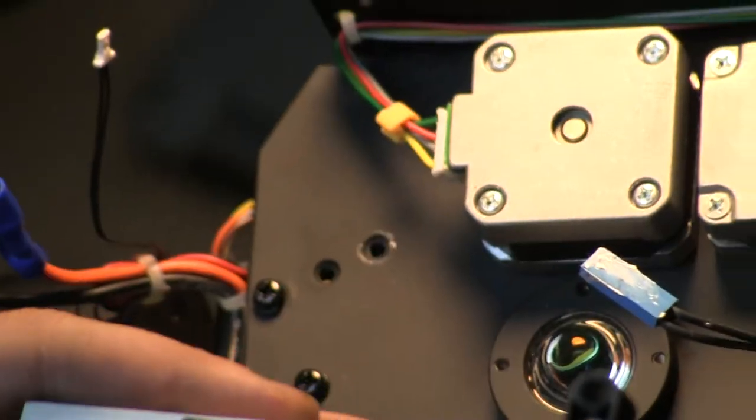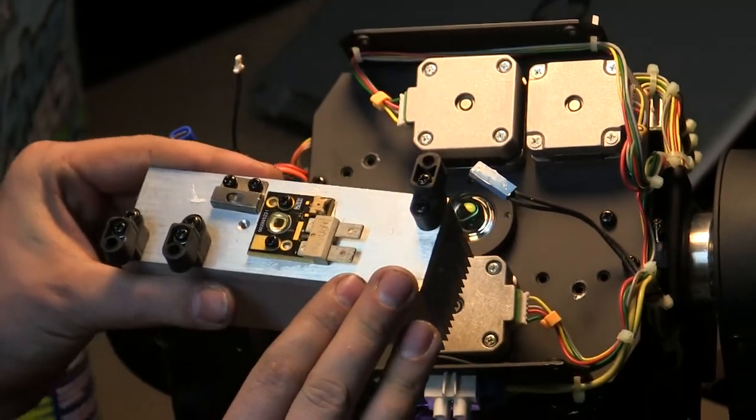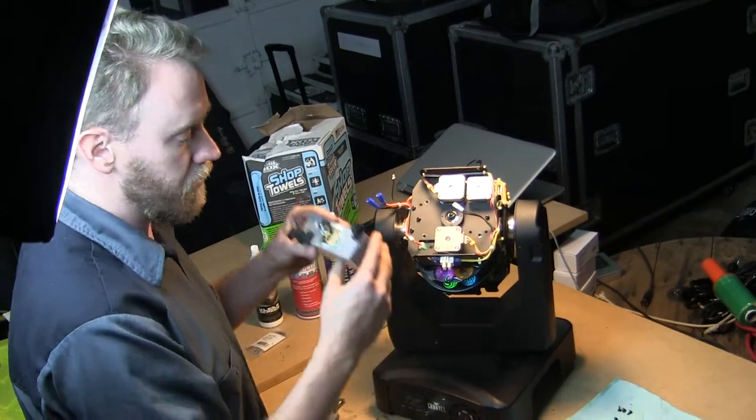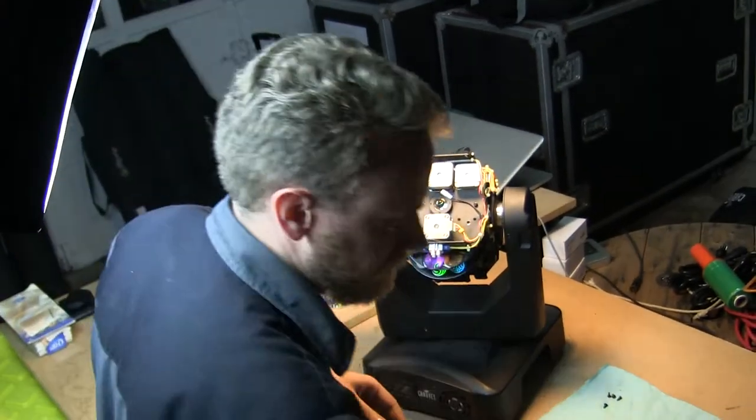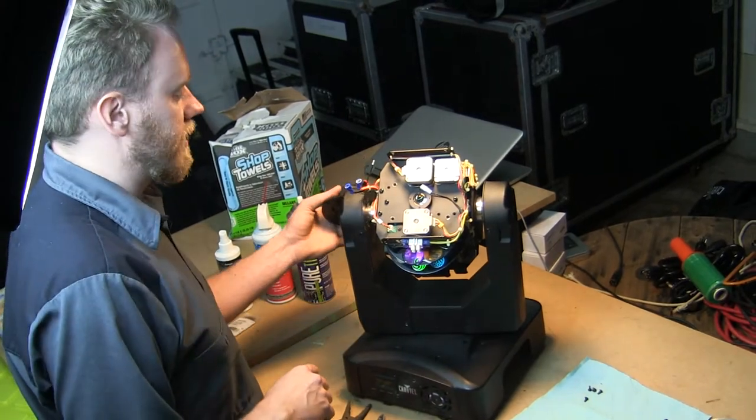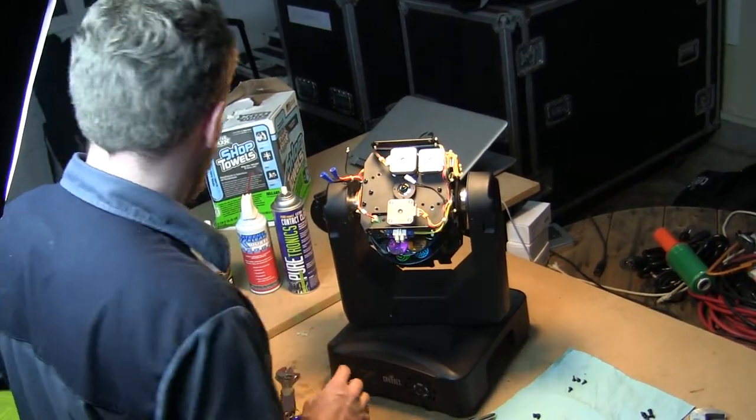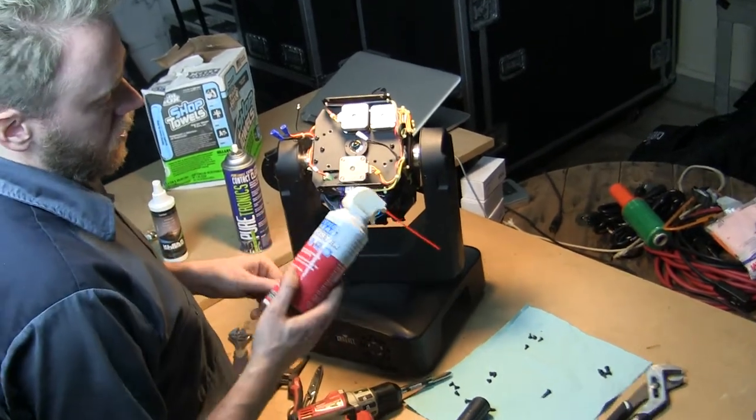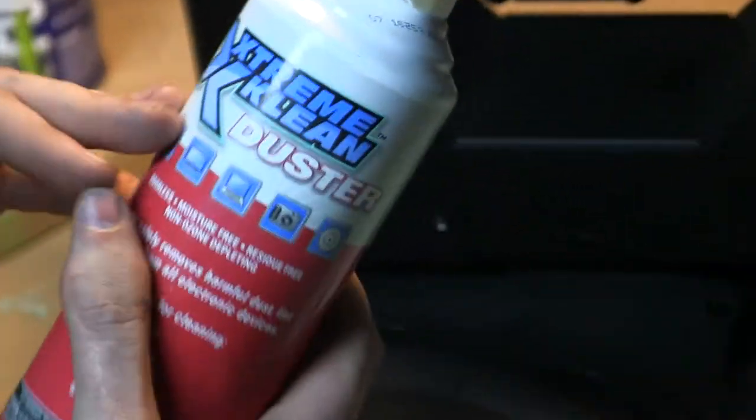So for the time being we're going to set this entire assembly to the side so that we can clean the fixture entirely, get it all nice and clean before we bring in the new replacement. Again keeping in mind that this fan is floating, we need to be very careful.